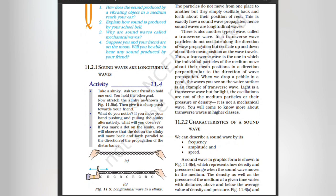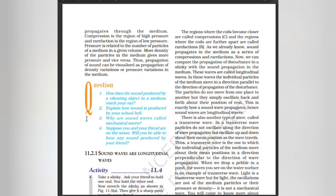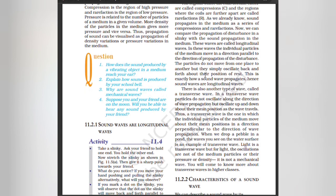Activity: Take a slinky. Ask your friend to hold one end and you hold the other end. Now stretch the slinky and give it a sharp push towards your friend. What do you notice? If you move your hand pushing and pulling the slinky alternately, you will observe that a marked dot on the slinky moves back and forth parallel to the direction of propagation of the disturbance. The regions where the coils become closer are called compressions and the regions where the coils are further apart are called rarefactions. We can compare the propagation of disturbance in a slinky with sound propagation in the medium. These waves are called longitudinal waves. In longitudinal waves, the particles of the medium move in a direction parallel to the direction of propagation of the disturbance. The particles do not move from one place to another but simply oscillate back and forth about their position of rest. This is exactly how a sound wave propagates — hence sound waves are longitudinal waves.